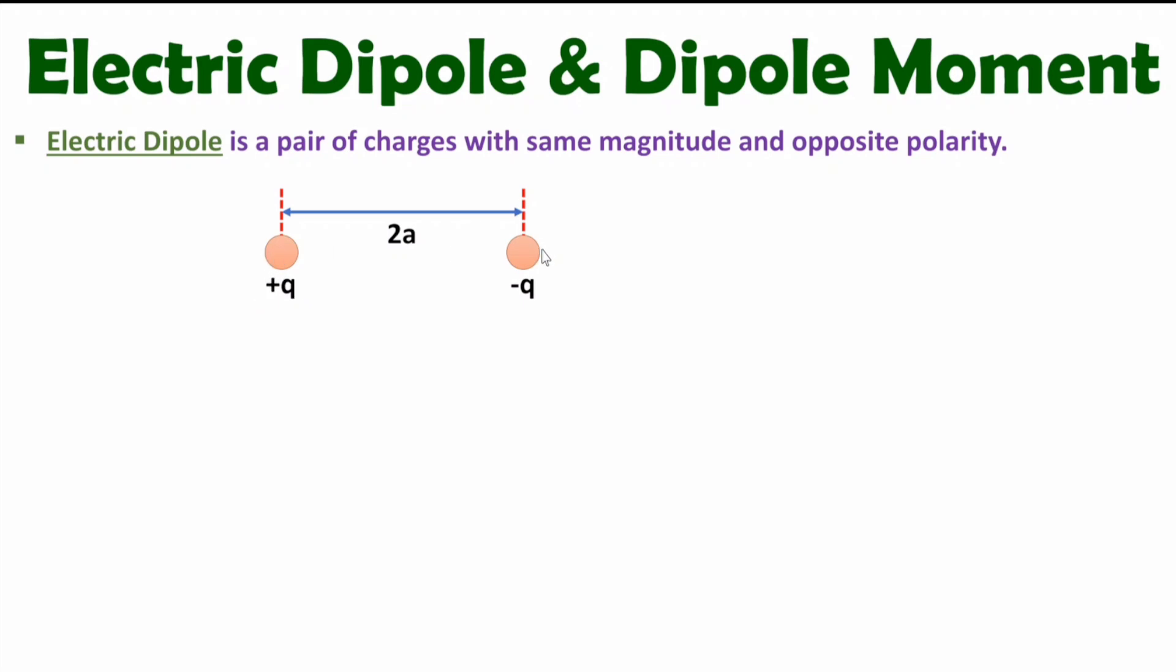When you talk about electric dipole, you should know electric dipole is a pair of charges with same magnitude and opposite polarity. If you observe here, we have two charges: one charge has value plus Q and the second charge has value minus Q. So here we have two charges with same magnitude and opposite polarity, separated by distance 2a.